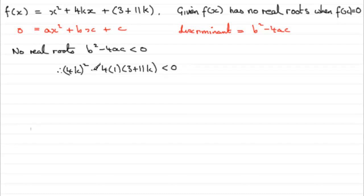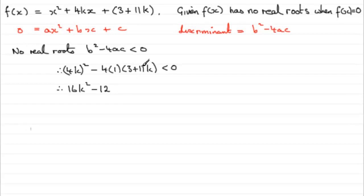We need to expand this and clean it up. So (4k) squared is going to be 16k squared, then minus 4 multiplied by 3 gives minus 12, and minus 4 times 11k gives minus 44k. And that's going to be less than zero.